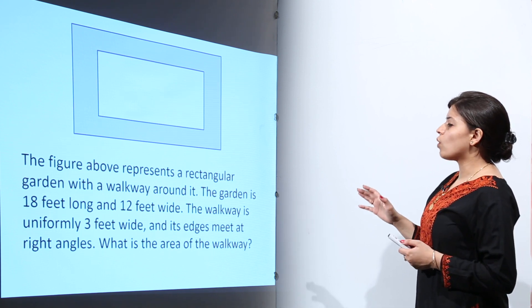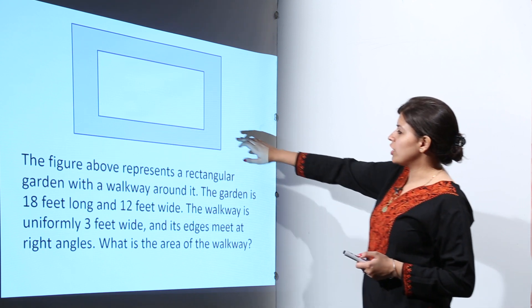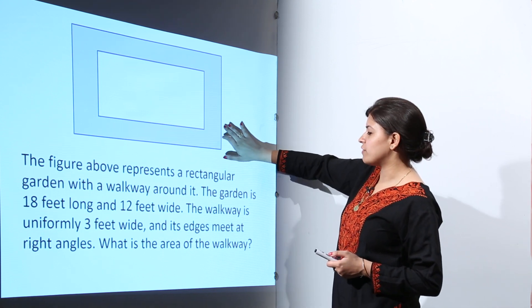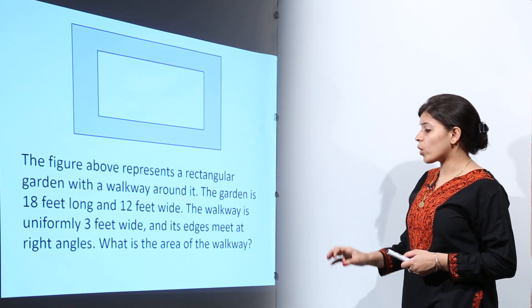The garden is 18 feet long and 12 feet wide, and the walkway is uniformly 3 feet wide. That means this is 3 feet, and its edges meet at right angles, so it is a rectangle. Now, what is the area of the walkway?